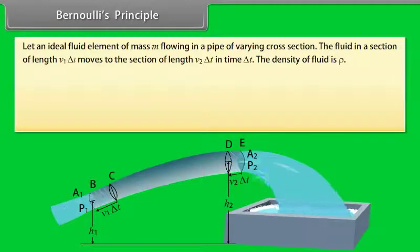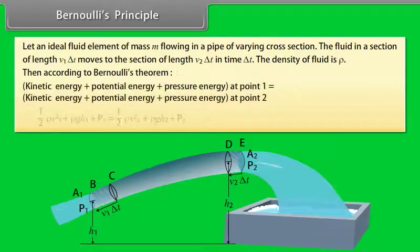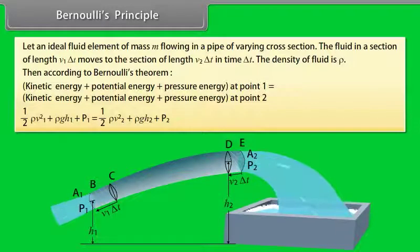Let an ideal fluid element of mass M flowing in a pipe of varying cross-section. The fluid in a section of length V₁ΔT moves to the section of length V₂ΔT in time ΔT. The density of fluid is rho. Then, according to Bernoulli's theorem, sum of kinetic energy, potential energy and pressure energy at point 1 is equal to sum of kinetic energy, potential energy and pressure energy at point 2.